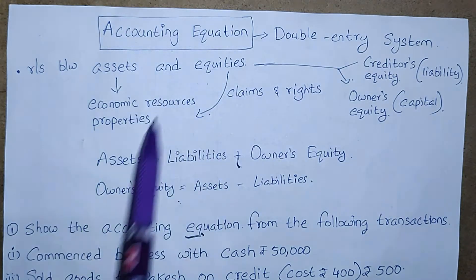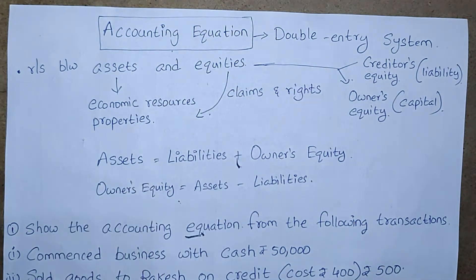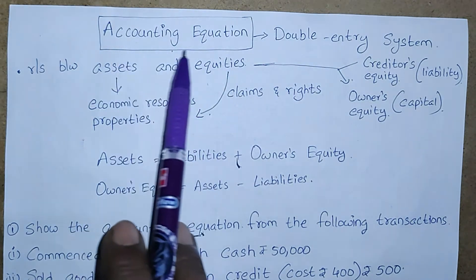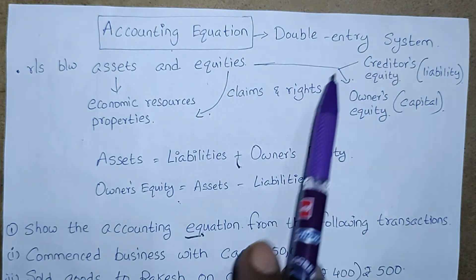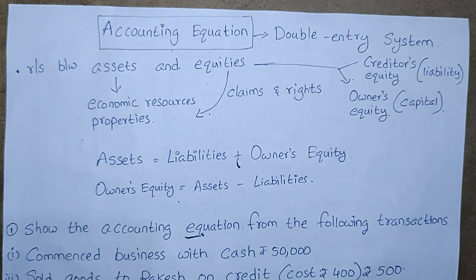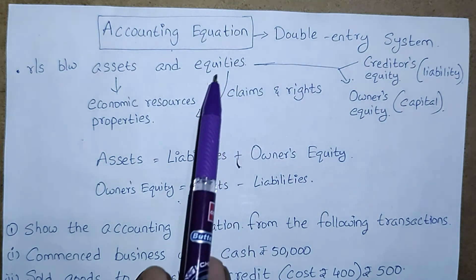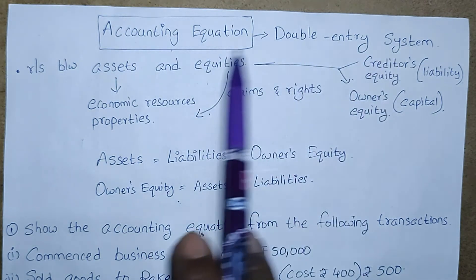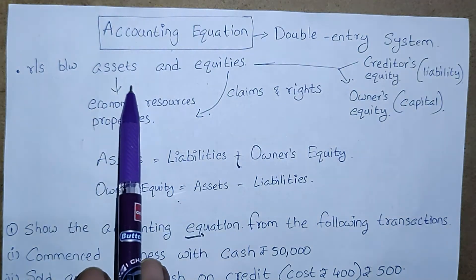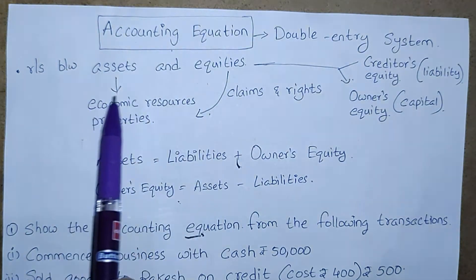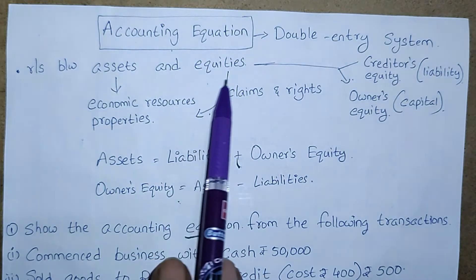We will start with this accounting equation. First, what is accounting equation? Accounting equation represents a double entry system. In double entry system, credit and debit is happening — that is called as double entry system. This accounting equation regarding this double entry system shows the relationship between the assets and equities. First, we will learn what are assets and next we will move to the equities.